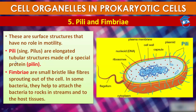Pili and fimbriae, beside flagella, are also surface structures of bacteria that do not play a role in motility. They are elongated tubular structures made up of a special protein called pilin. Fimbriae are small bristle-like fibers sprouting out of the cell.